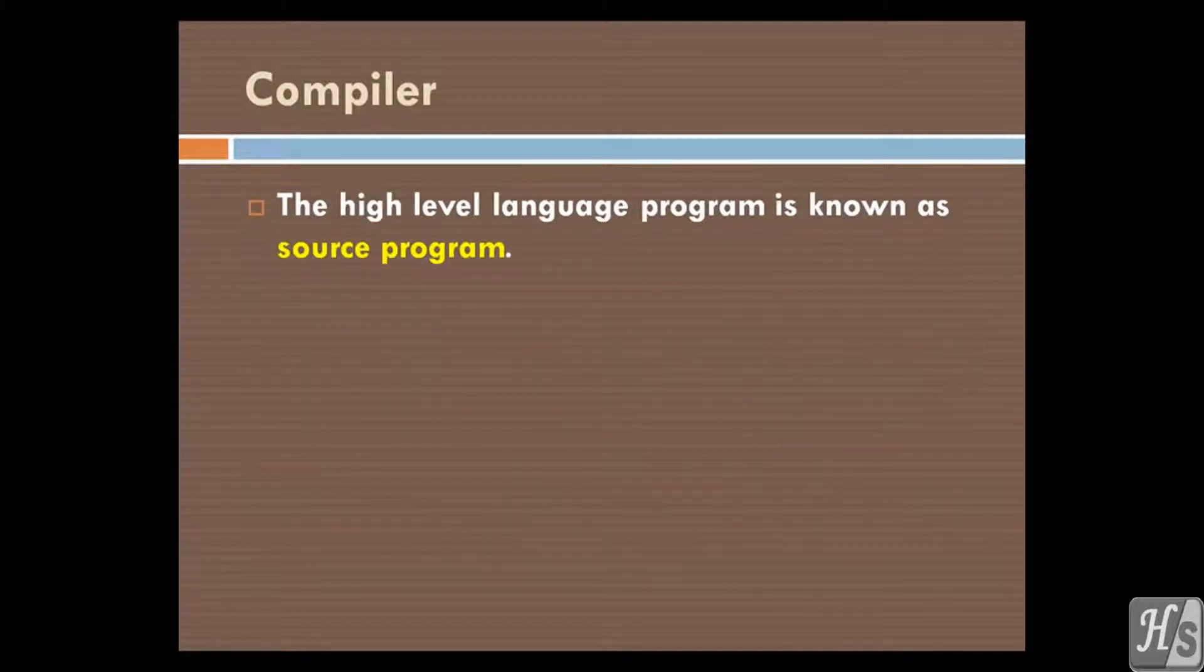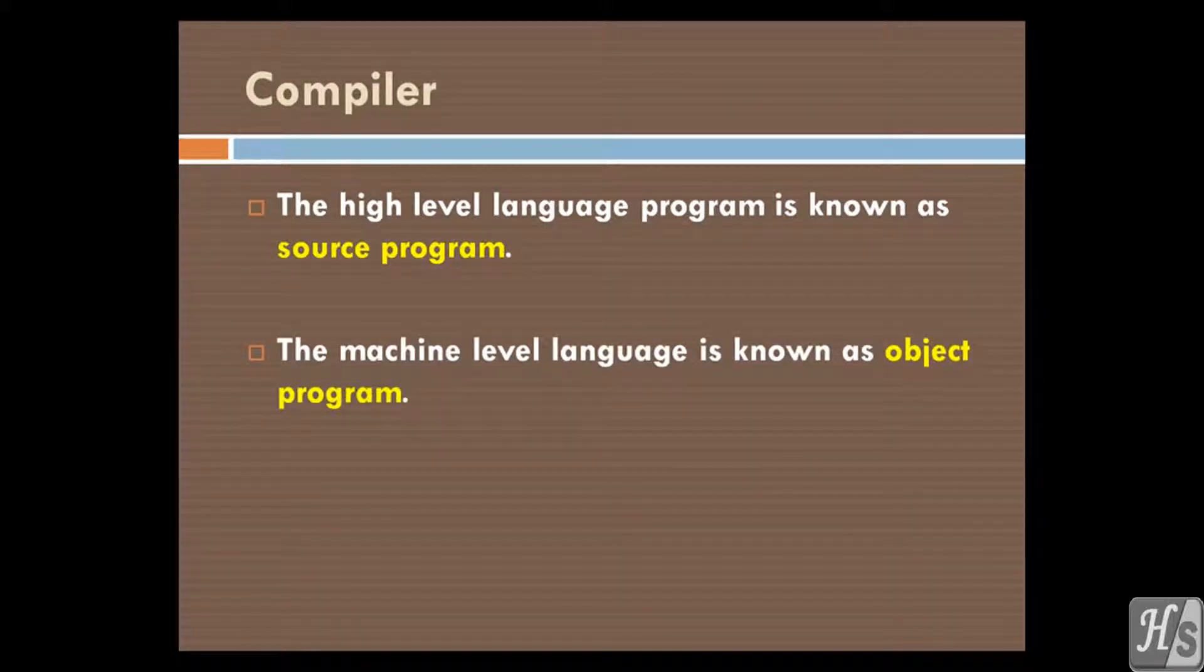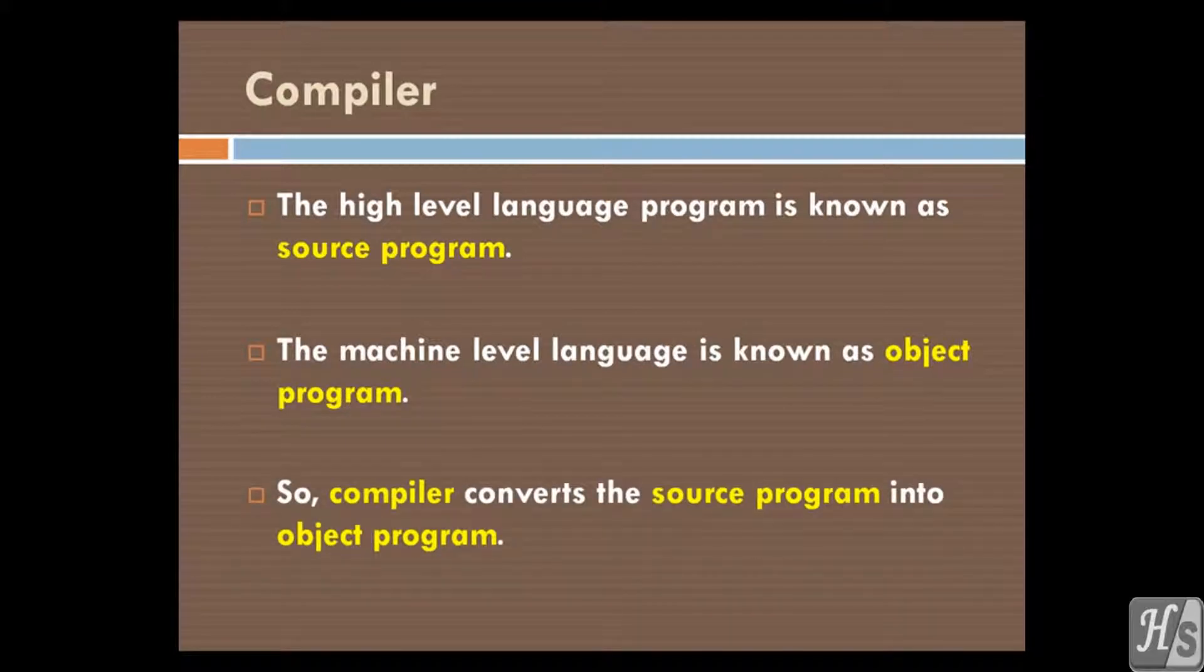The high level language program is known as source program, and the machine level language is known as object program. So, compiler converts the source program into object program.